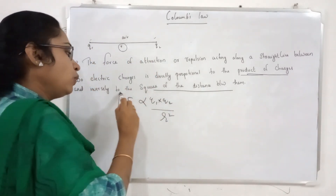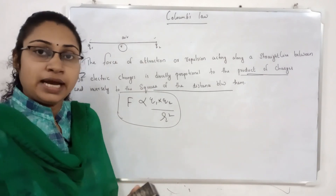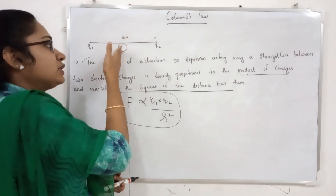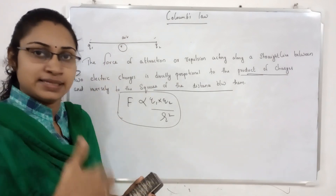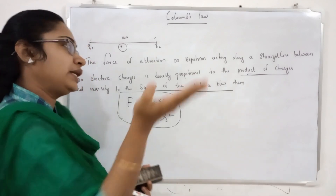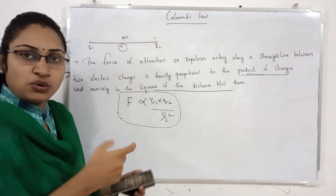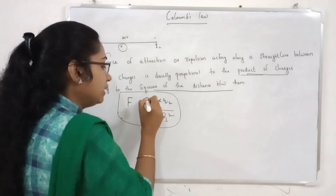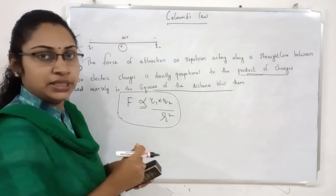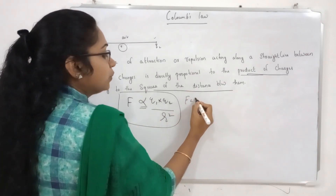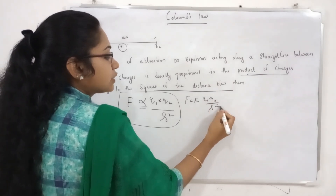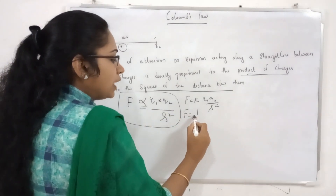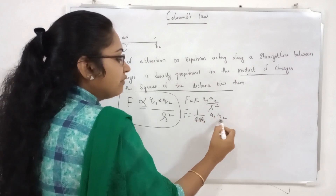This is Coulomb's law. If it is directly proportional to the product and inversely proportional to the square of the distance, we introduce a constant. That constant gives us: F is equal to k into Q1 Q2 divided by R square. That is also written as F is equal to 1 by 4 pi epsilon 0, Q1 Q2 divided by R square.